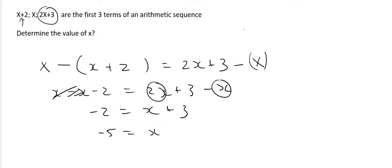If you needed to know the original sequence then you could fill x in. So the first term is minus 5 plus 2 which is minus 3. The second term is just x, that's minus 5. And the third term is 2 times minus 5 plus 3, and that's going to give you minus 7.